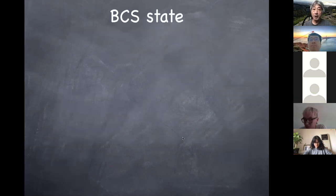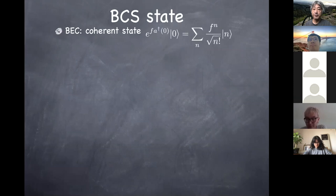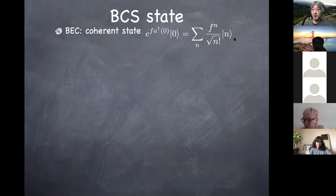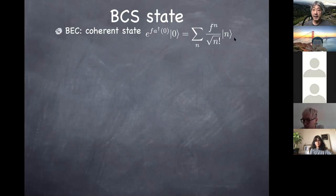Now let's talk about the BCS state. BCS stands for Bardeen, Cooper, and Schrieffer, who first proposed it. In the case of bosons, you can create a Bose-Einstein condensate described by a coherent state — an exponential of the creation operator for bosons falling into the zero-momentum mode, written as a linear superposition of states with different numbers of particles. This particle-number uncertainty gives coherence. The question is: what about fermions?